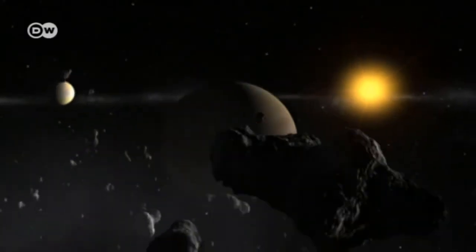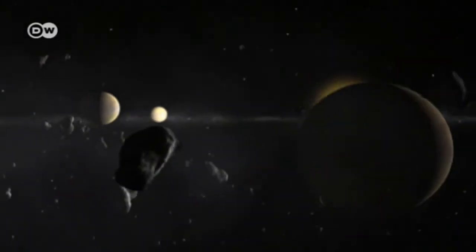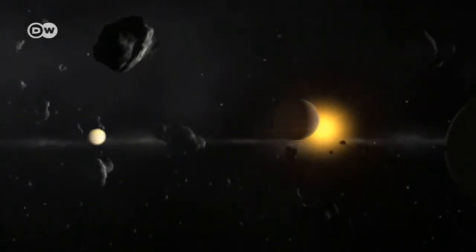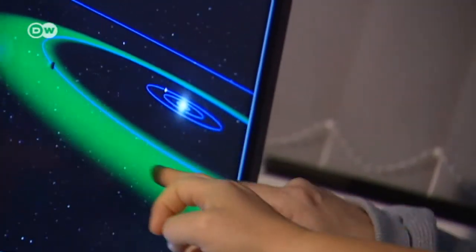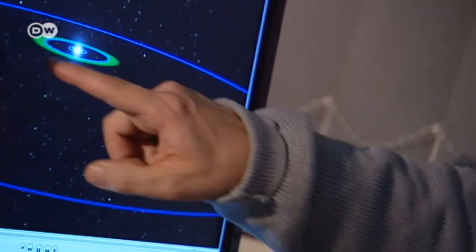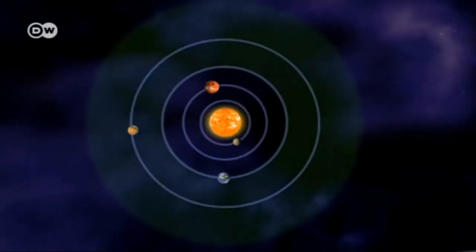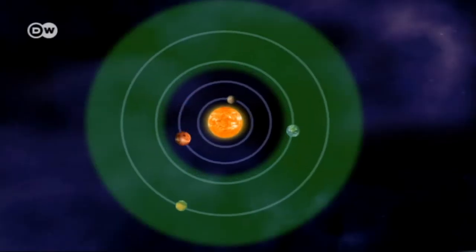The next question is whether any of these distant worlds could be habitable. That's what scientists on the ground are now busy studying. The planet has to be orbiting in a habitable zone, not too close or too far away from its sun. Water in liquid form is necessary for life on Earth, for example. So if the temperature on another planet is somewhere between zero and a hundred degrees centigrade, then liquid water could be there, which would be positive for the development of life.